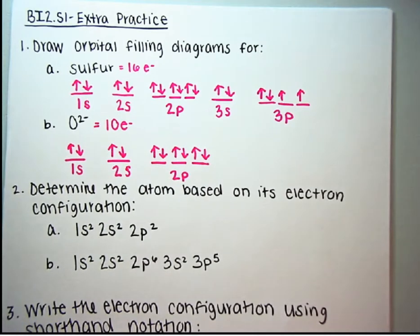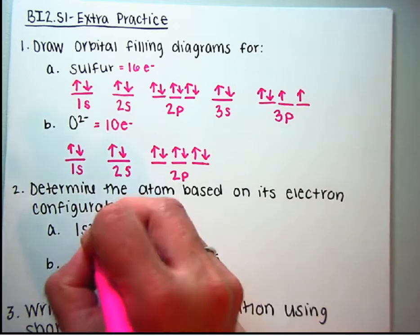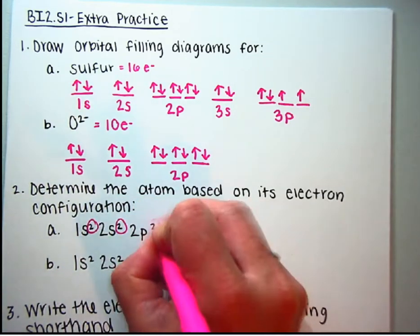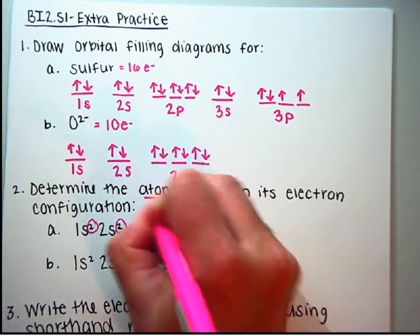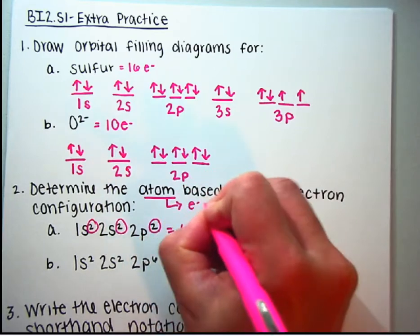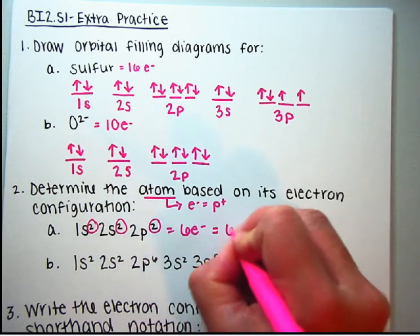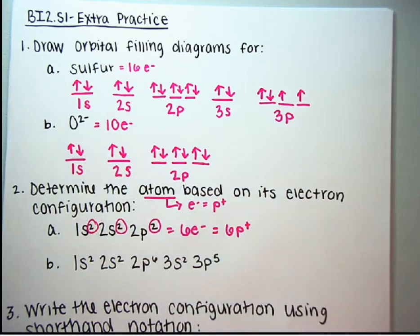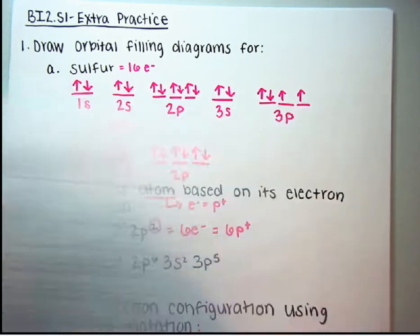Alright, next. I want you to try number 2. Pause the video. Once you have your answer, unpause and come back to check your work. The easiest way to do number 2 is just to count the number of electrons. Remember the electrons are the exponents. So 2, 4, 6. There are 6 electrons. These are all atoms. So that means that the number of electrons are equal to the number of protons. So I would also have 6 protons. Head to your periodic table. Atomic number 6 is carbon.